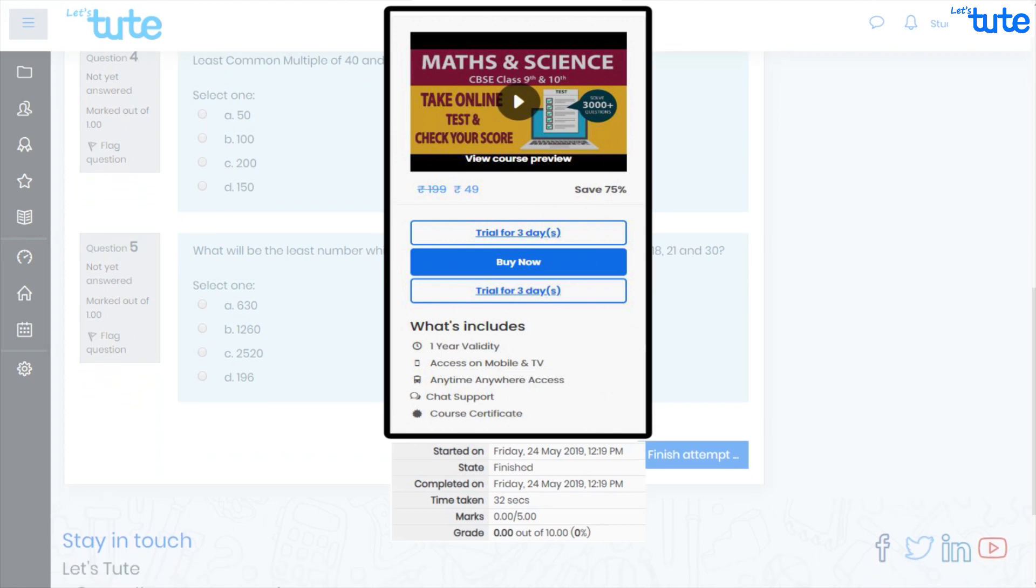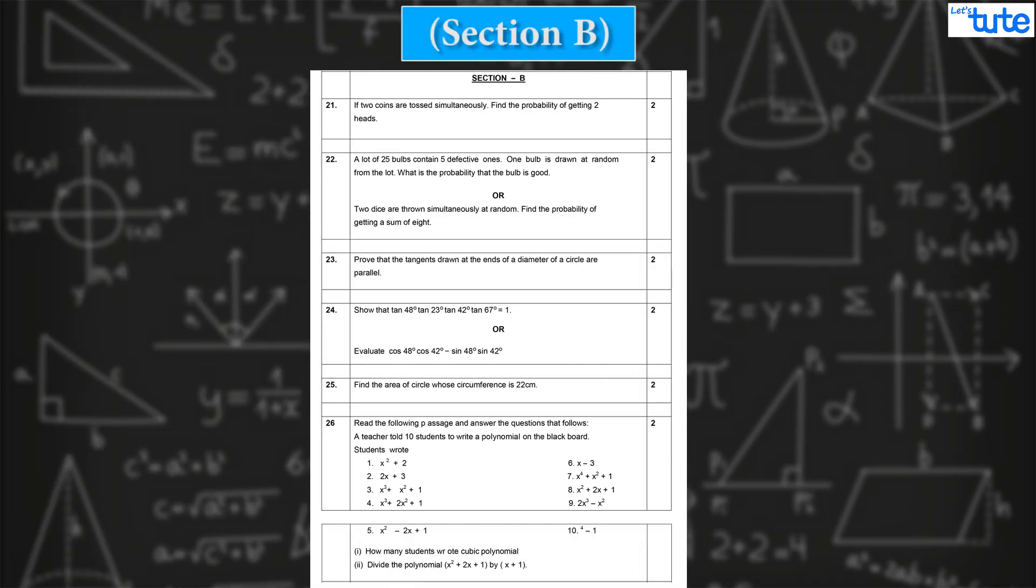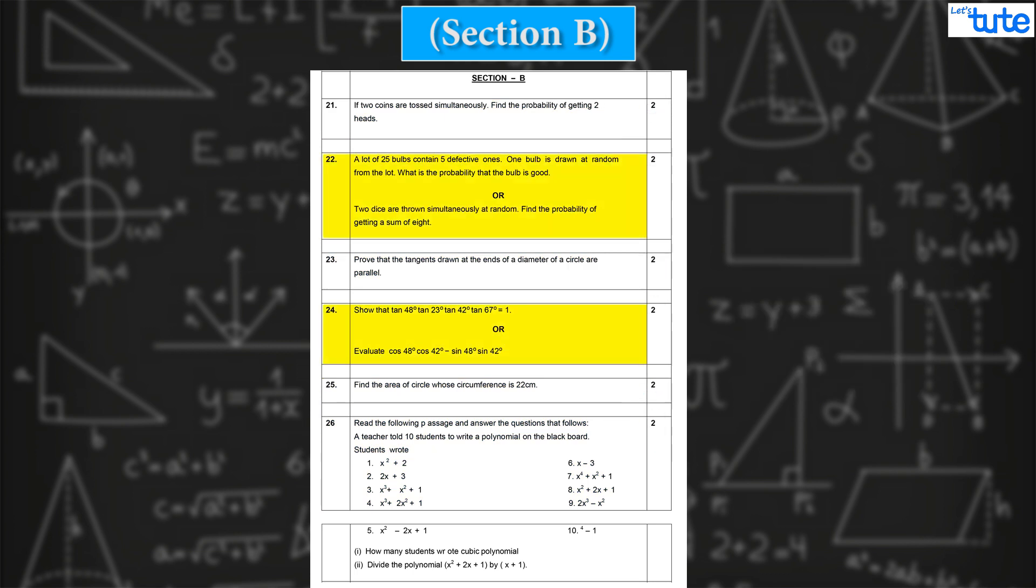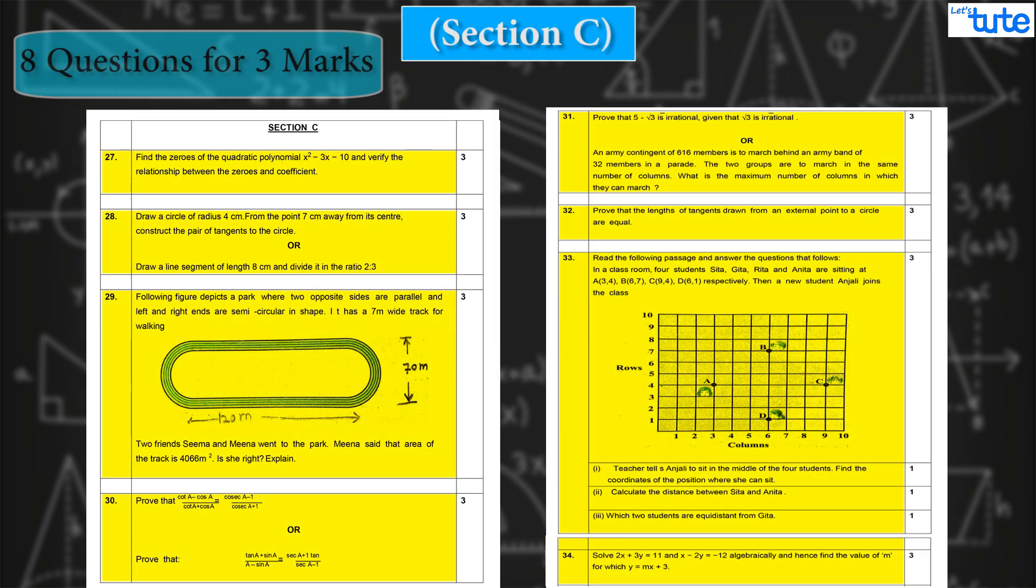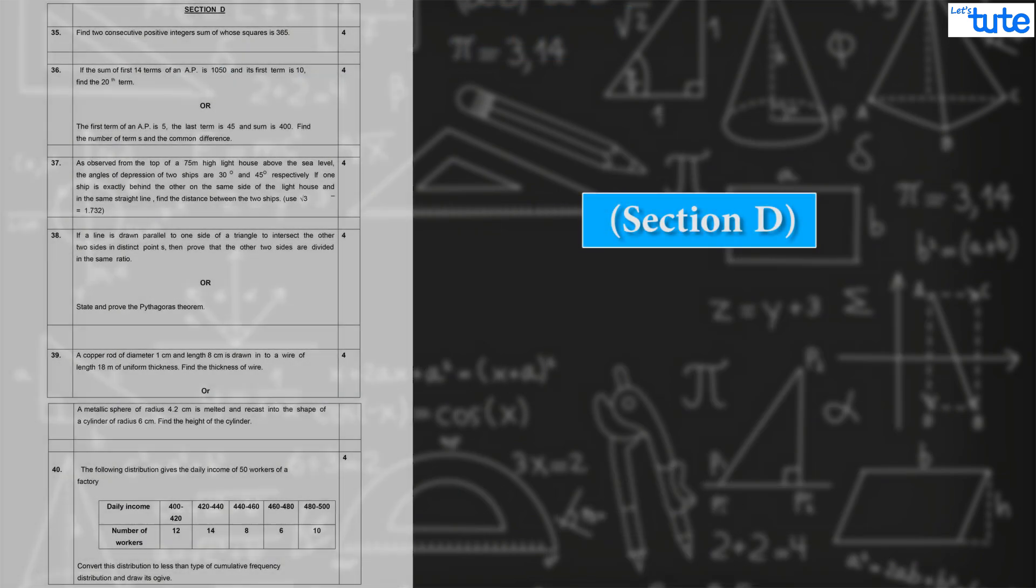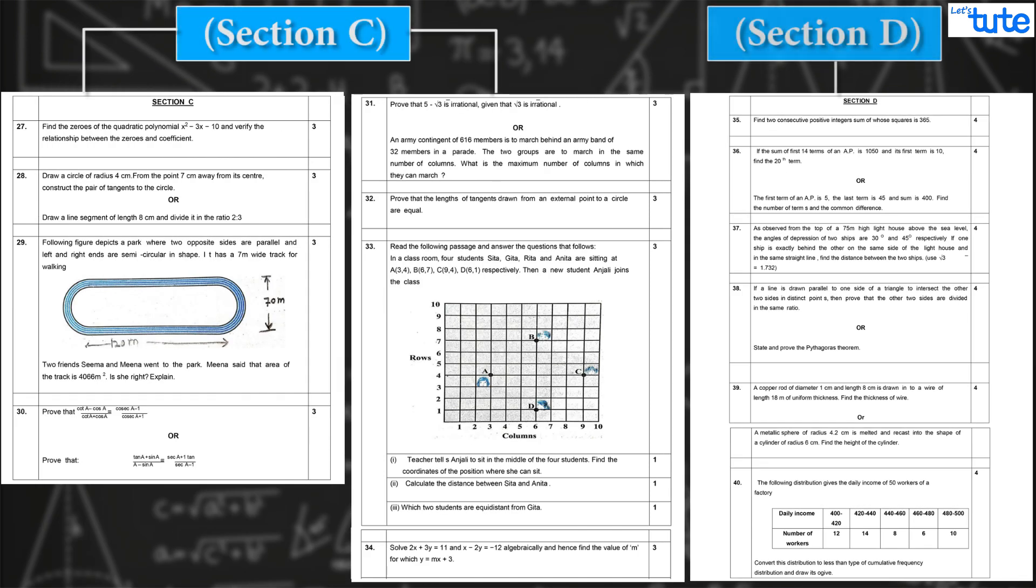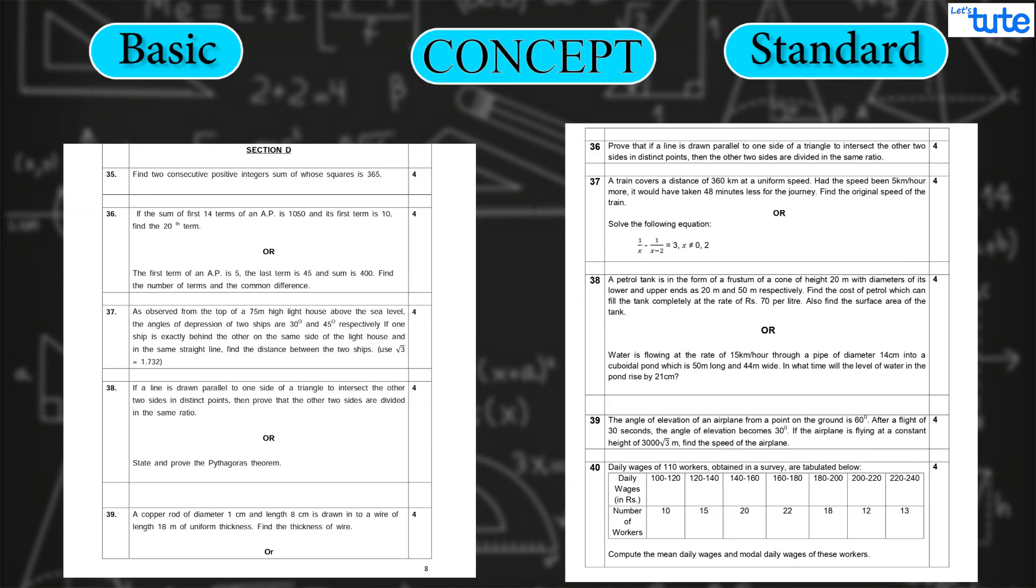Now coming back to the paper pattern, in section B you will get six questions of two marks each and internal choice in two questions will be given, like you can see here in question 22 and 24. Similarly in section C you will get eight questions of three marks each, and in section D also you will get six questions for four marks each. In both sections C and D you will get three internal options.